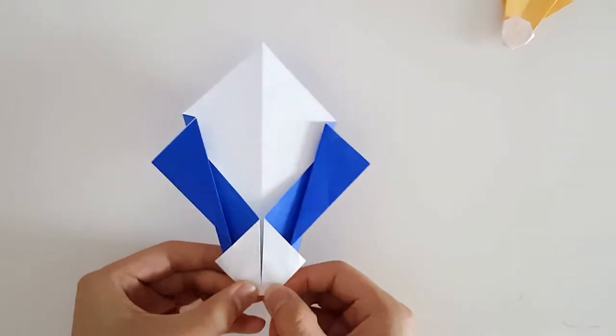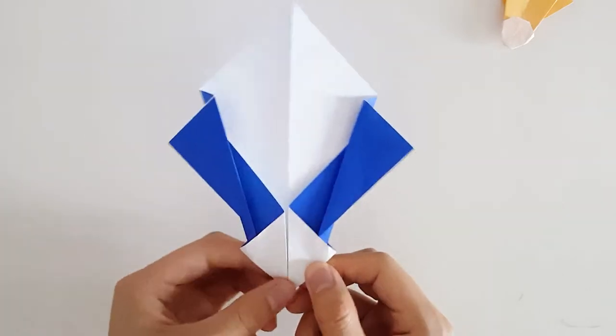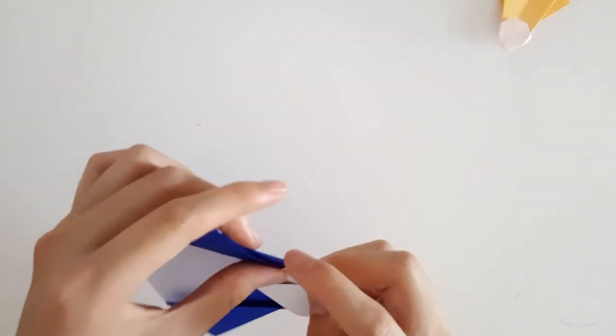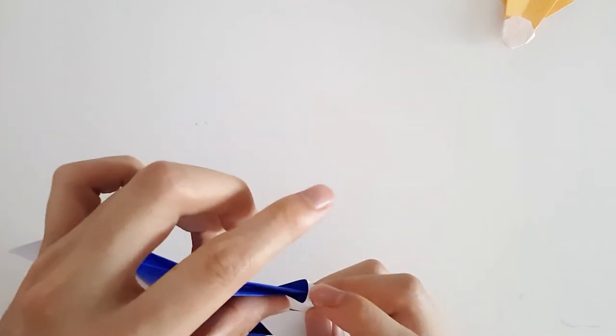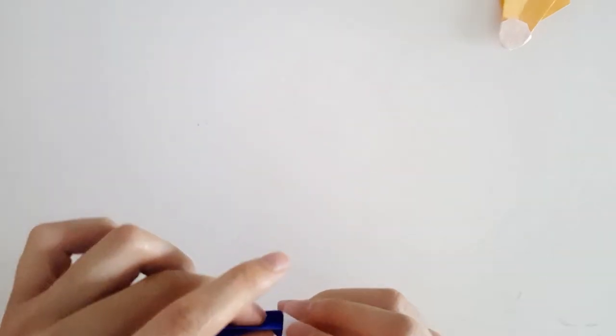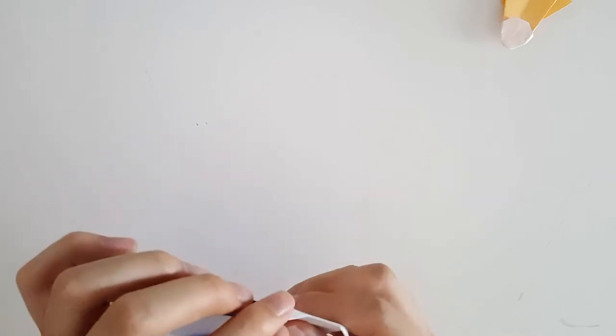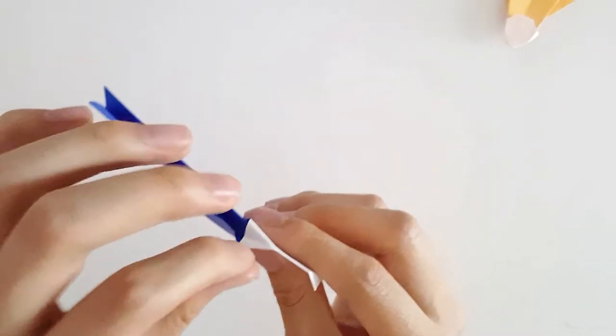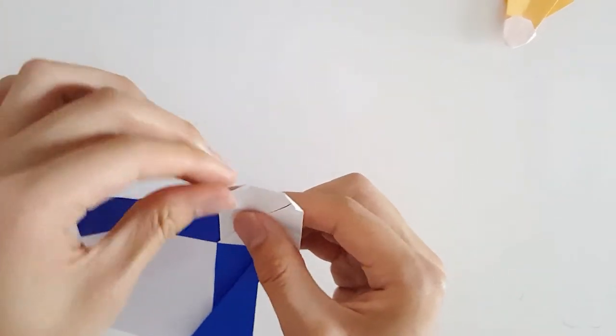I'm just folding the little bottom part down as well. We're just using them as little creases. What we want to do is kind of just push it in. We see one of the layers will fold in.